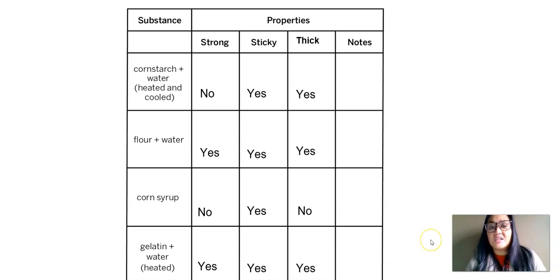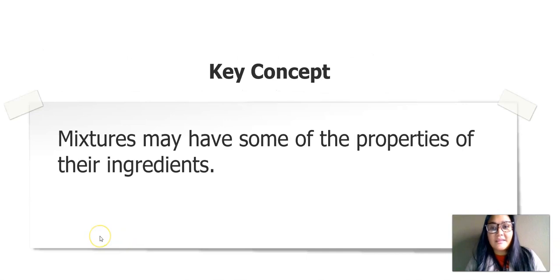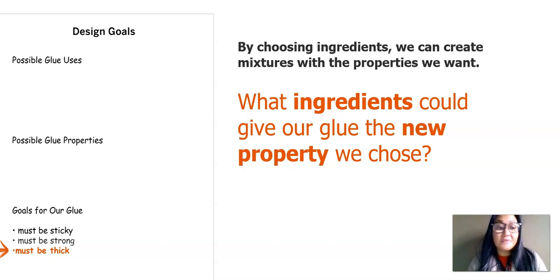I'm also wondering if you wrote anything in the notes column — I kind of left that blank. We have gathered a lot of evidence on the different properties of each ingredient. Now you need to think about which substances you want to use for your glue. Here's a key concept: mixtures may have some of the properties of their ingredients. By choosing the ingredients, we can create mixtures with the properties we want. We now have three goals for our glue: it must be sticky, strong, and thick.